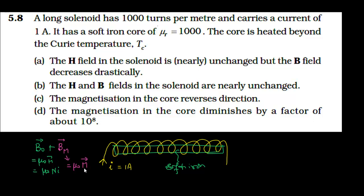This M is the intensity of magnetization. The net field B after inserting the iron core consists of two fields: B₀ and BM. Now, M depends on H, and the ratio M/H is the magnetic susceptibility χ. So for a given H — since current is fixed here — M is proportional to χ. That is the information we have from this situation. Now let us check all the options.